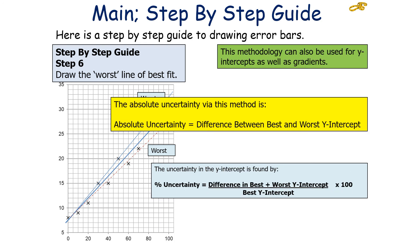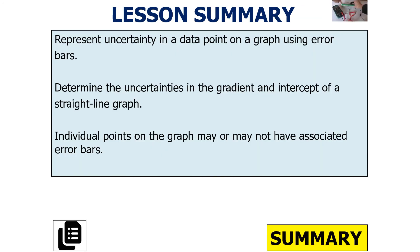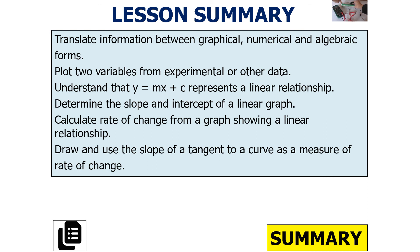This can also be done for y-intercepts as well as gradients. The absolute uncertainty can be the difference between the best and the worst y-intercept, or the difference between the two worst y-intercepts divided by two. The percentage uncertainty for the y-intercept is: (difference between the best and worst y-intercepts) ÷ best y-intercept × 100. So in summary: we can represent uncertainty in a data point using error bars, determine uncertainties in the gradient and intercept of a straight line graph, and individual points may or may not have associated error bars. We can translate information between graphical, numerical, and algebraic forms, and plot two variables from experimental data.